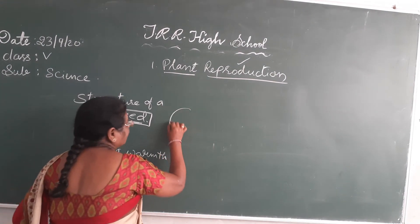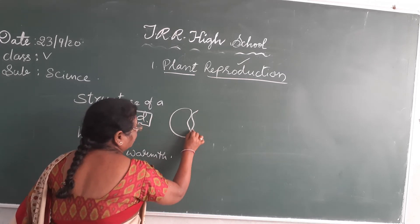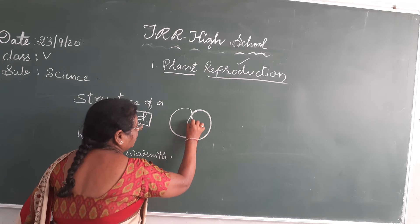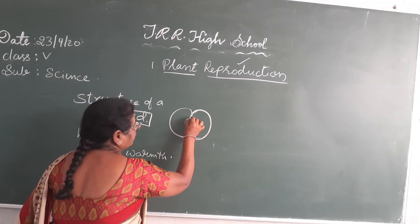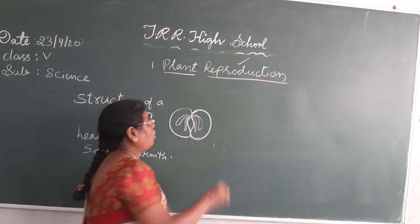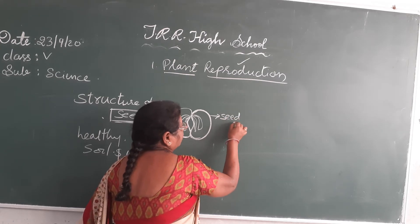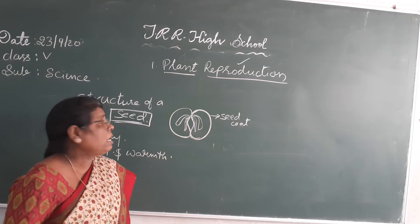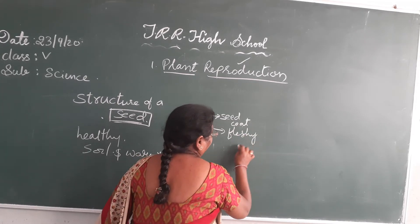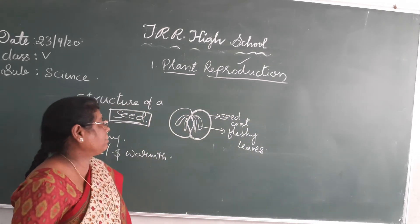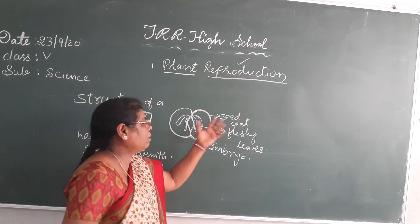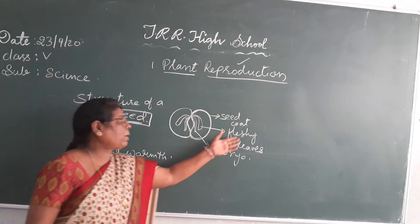Now, what are the parts of a seed? The outermost covering of a seed is called the seed coat, which protects the inner parts of the seed. These inner parts are called fleshy leaves (cotyledons), which store food for the growing embryo. And the innermost part is called the embryo — the baby plant. These are the parts of the seed.